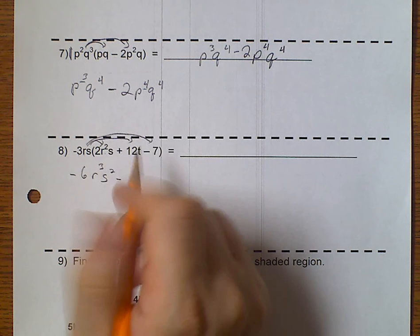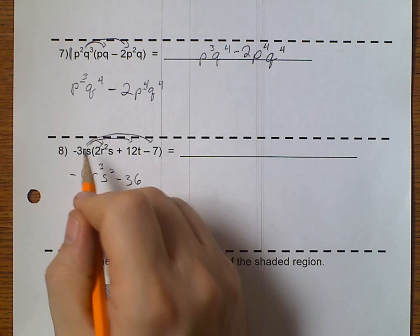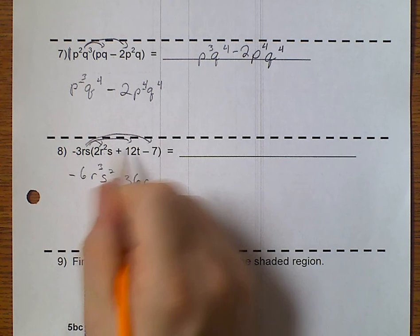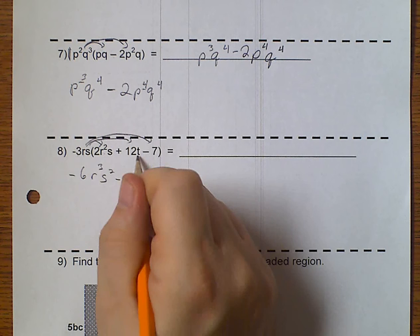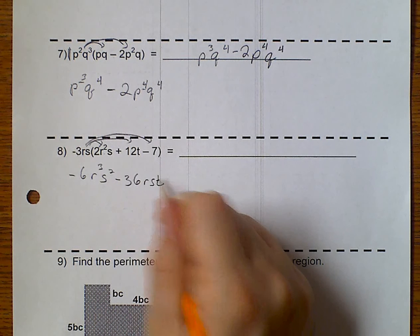Negative 3 times 12 is a negative 36. r, no r's. s, no s's. And, now I throw in a t. Because that t is here.